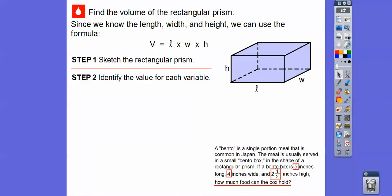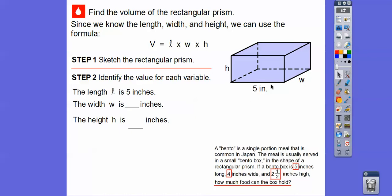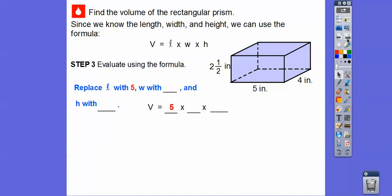We know the length is five inches, the width is four inches, and the height is two and a half inches. Now we're going to replace L with five in the formula, W with four, and H with two and a half. So it's going to be five times four times two and a half. Now let's multiply — an easy way is to multiply the whole numbers first: five times four is 20.